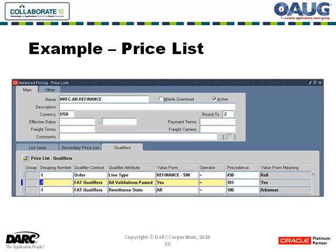Here's an example of one of the price lists we set up — the Arkansas refinance. The qualifiers shown include the line type representing the rate type, in this case refinance, and the remittance state, in this case Arkansas. In some cases you might see county included as a qualifier, and an 'all validations passed' function common to all price lists. This is the general structure — imagine four or five of these price lists per state, as some states had additional rate types.